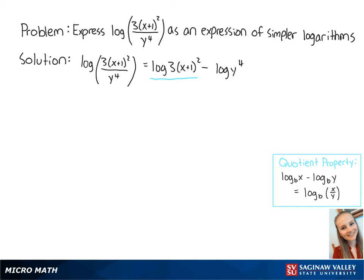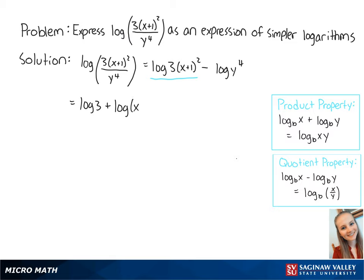Since there's multiplication within this log, we can now use the product property to rewrite this as the log of 3 plus the log of x plus 1 squared minus the log of y to the fourth.